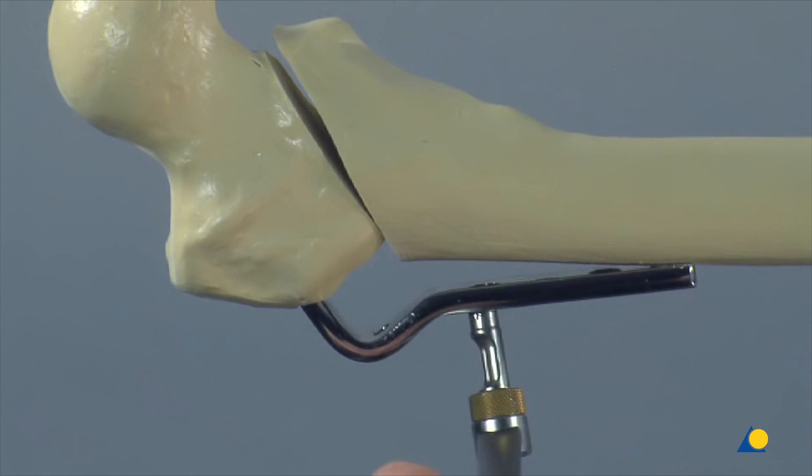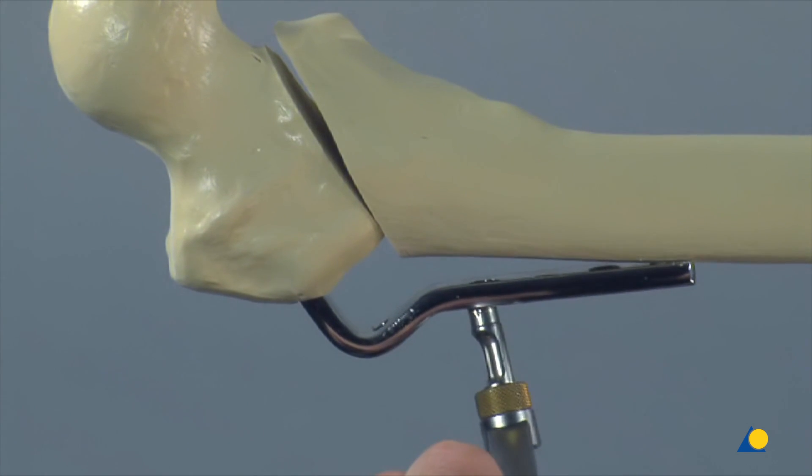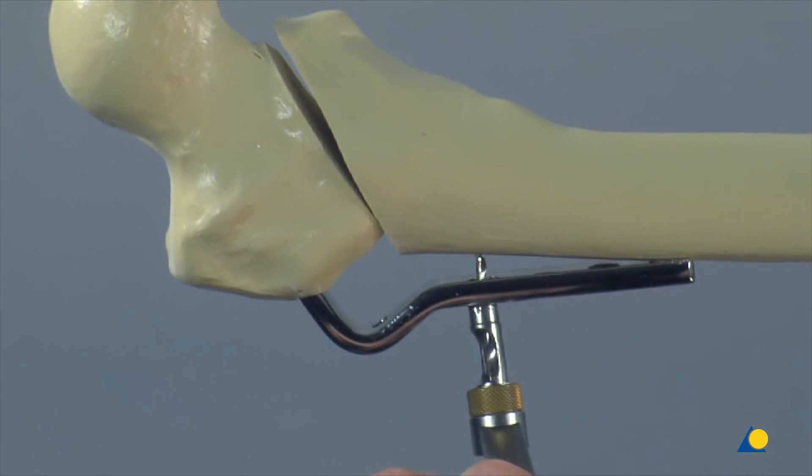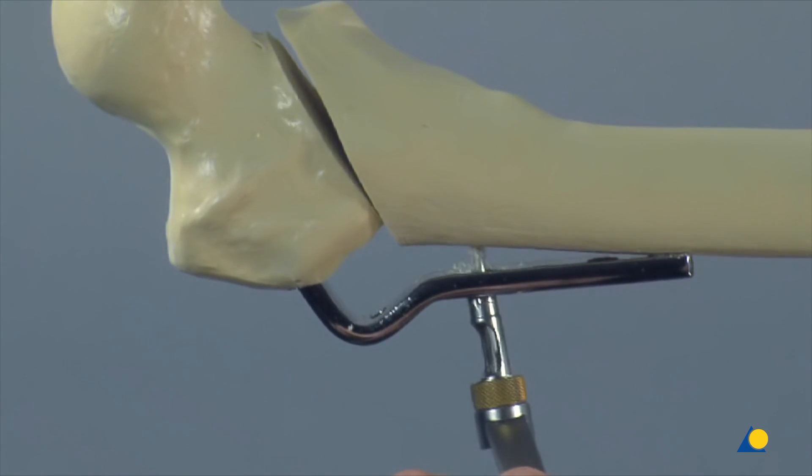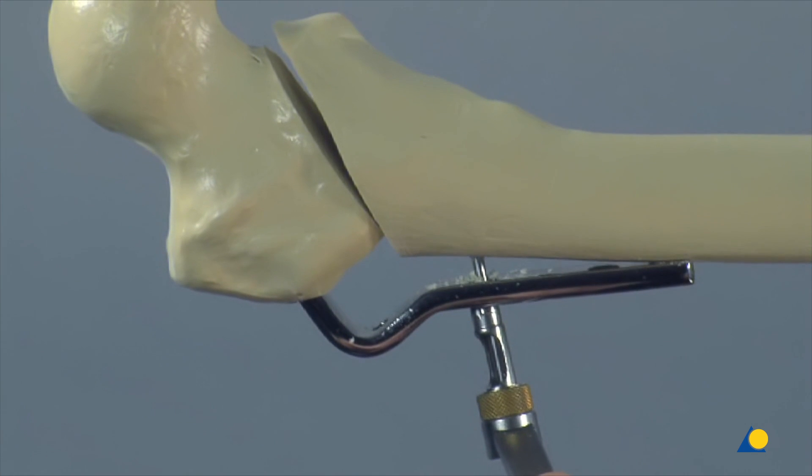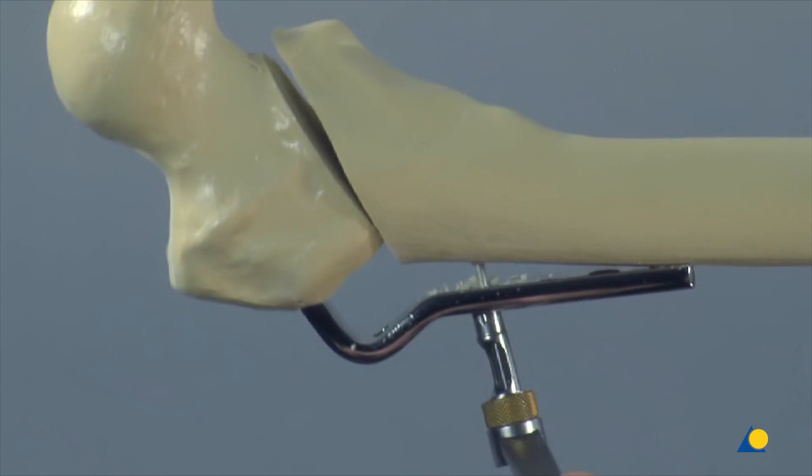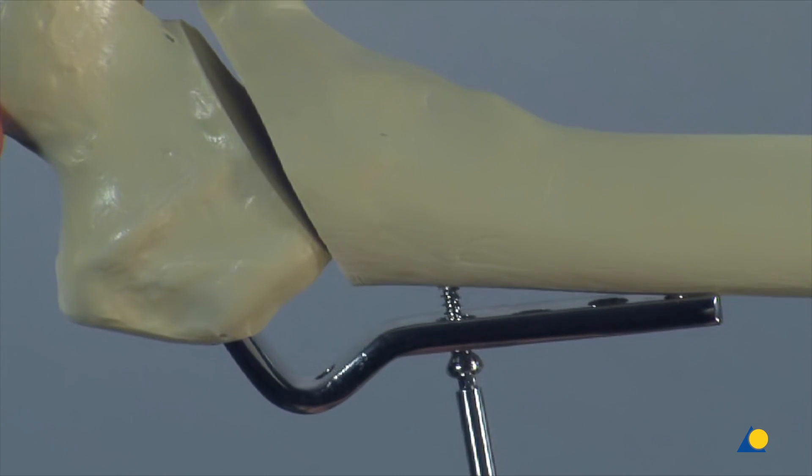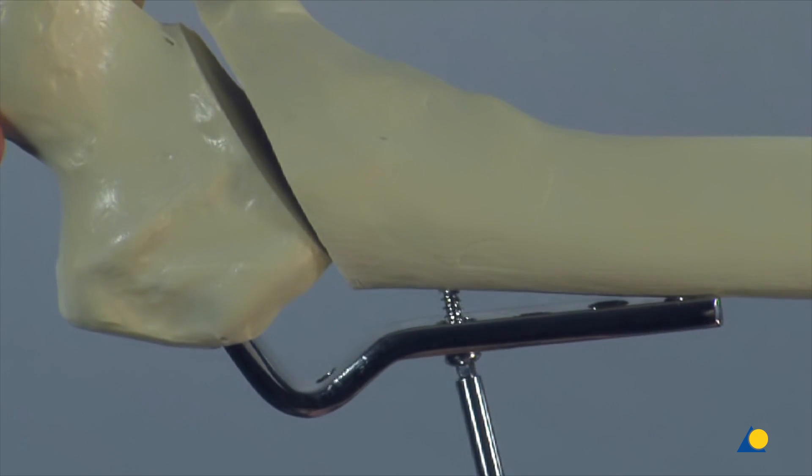A screw hole is now prepared through the proximal plate hole using the yellow eccentric DCP drill guide. As the plate has previously been left about one centimetre proud of the bone, when the screw is inserted and tightened, the plate is drawn to the bone.